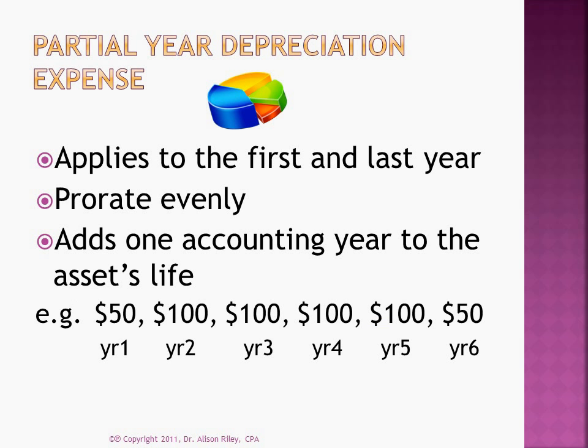Now let's look at what happens if a depreciable asset is placed in service during the course of the year, as opposed to on the first day of the year. At the end of the first accounting year — a partial year — one must simply calculate depreciation expense as instructed so far, but then prorate according to the fraction of the year that the asset was actually in service. Thus, if an asset is placed in service halfway through the year, it's necessary to divide the first year's annual amount in half. Notice that as a result, depreciation expense on a five-year asset, for example, will actually spread over six years' worth of accounting records, the first and last years being partial years.